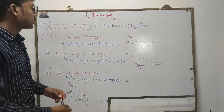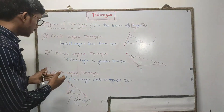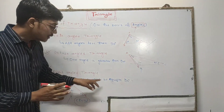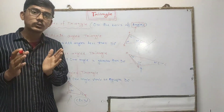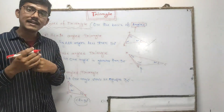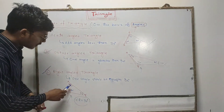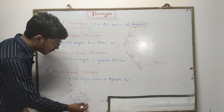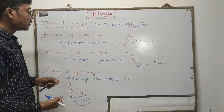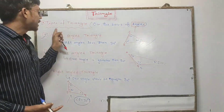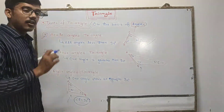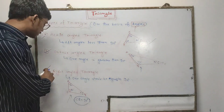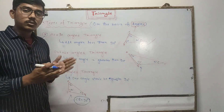The third type is a right angle triangle. In a right angle triangle, one angle should be equal to 90 degrees. In this figure, angle A is 60°, angle B is 90°, and angle C is 30°. Since angle B equals 90°, this triangle is known as a right angle triangle. So the three types by angles are: acute angle triangle (all angles less than 90°), obtuse angle triangle (one angle greater than 90°), and right angle triangle (one angle equal to 90°).